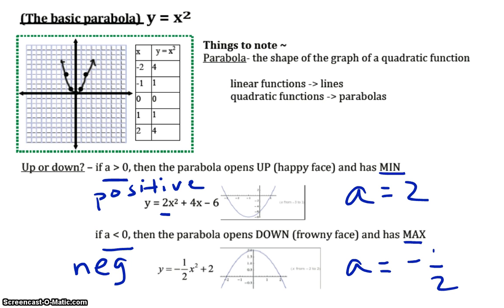All right. So, summary. If a is positive, it's happy. If a is negative, it's sad. So, it opens down, frowny face.